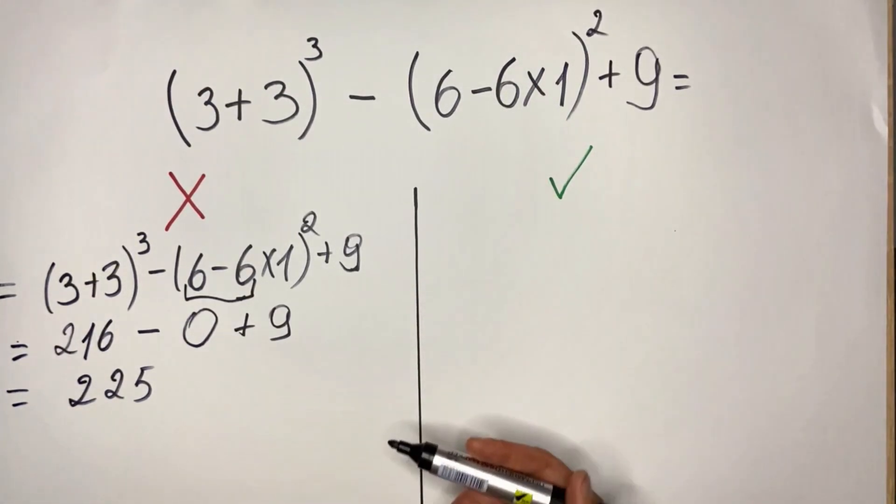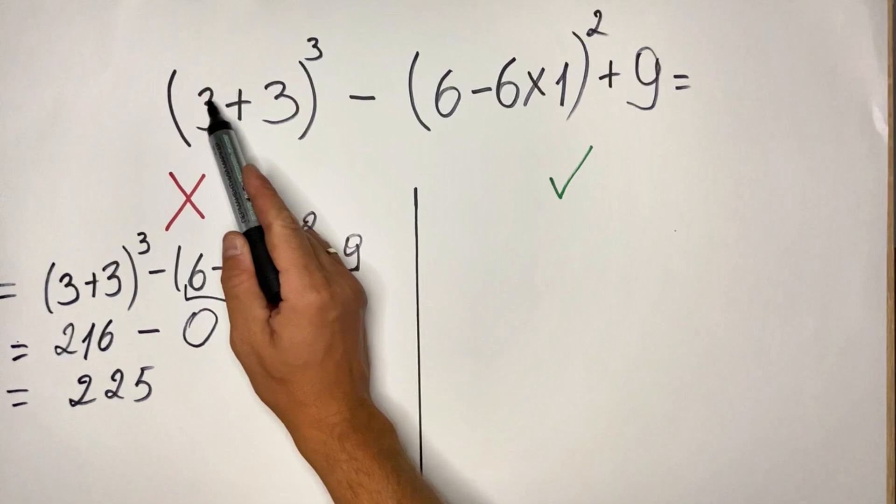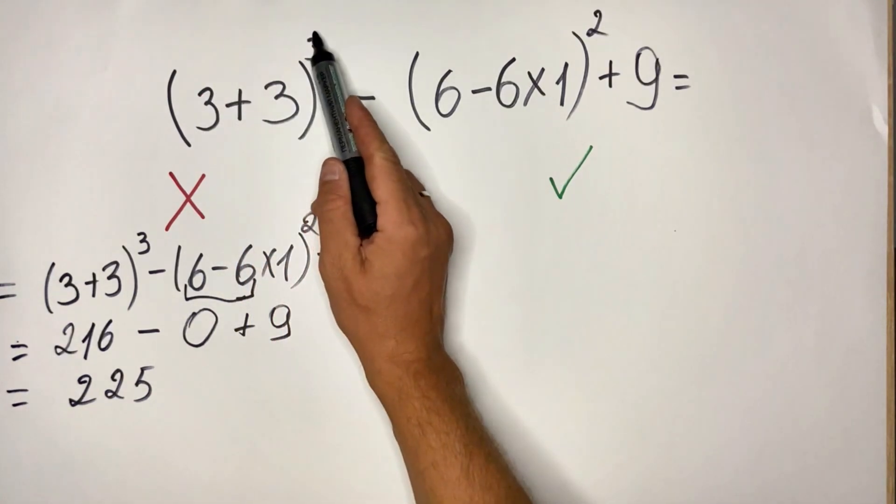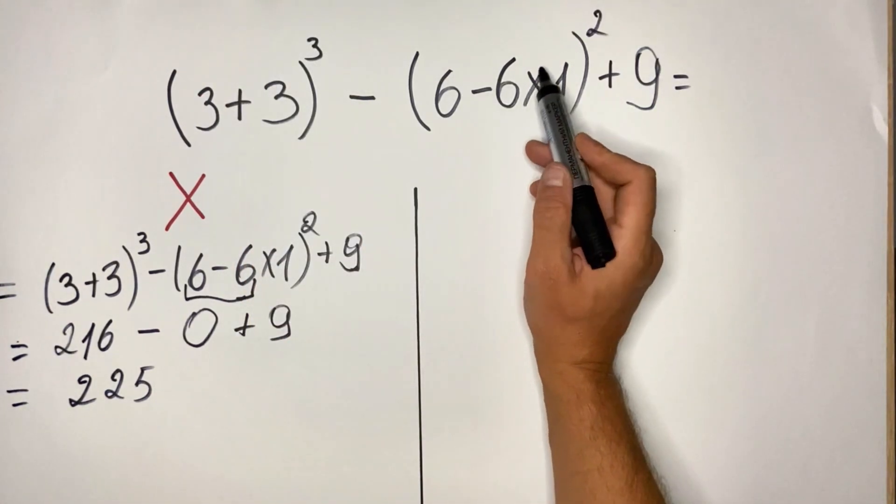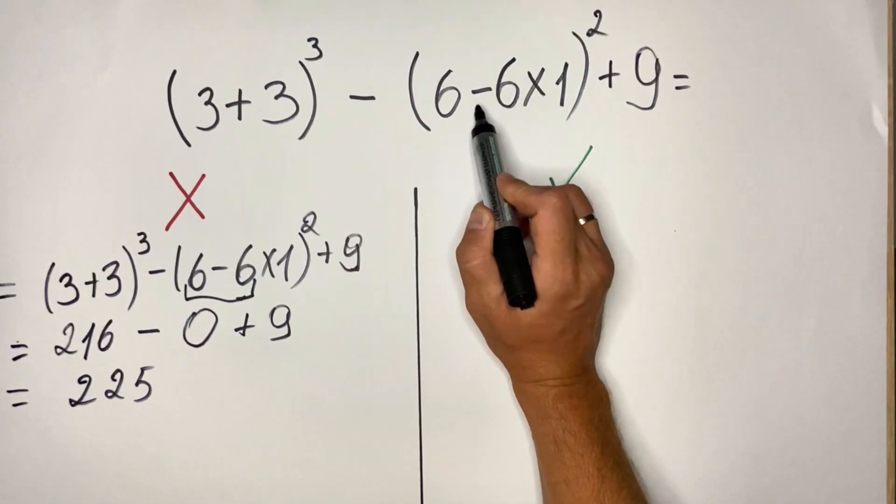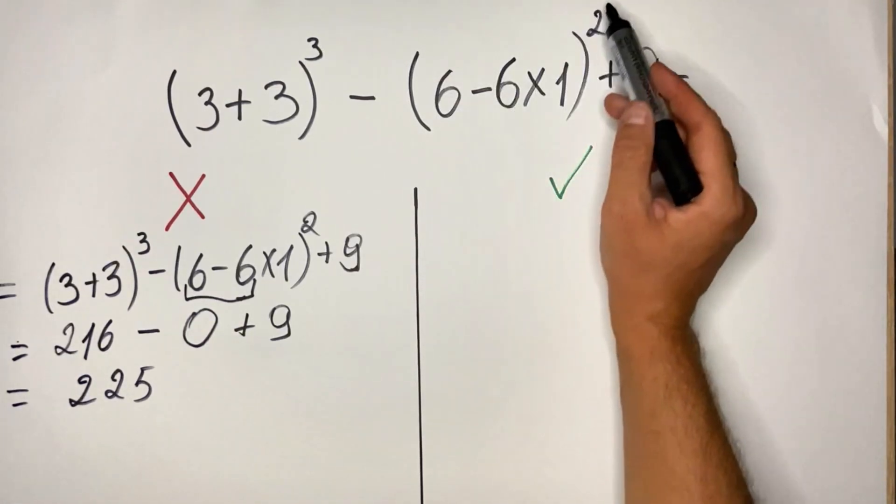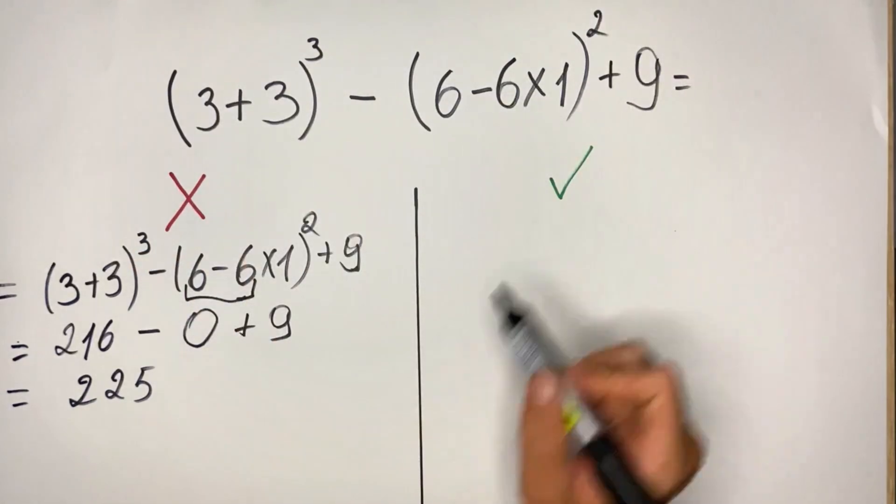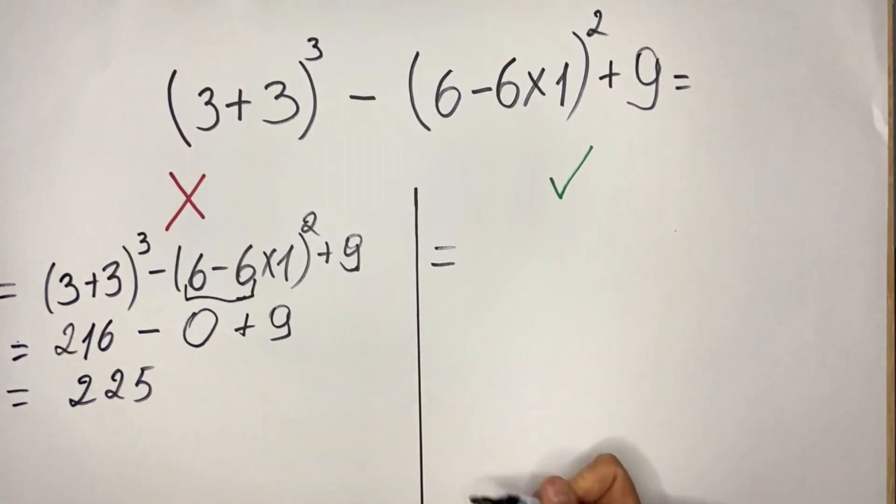Now if we do the correct way, first we'll do as mentioned the parenthesis, cubed, then here we do the multiplication, then the subtraction, and then everything we do it squared, and then we do from left to right all remaining operations.